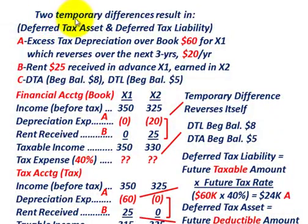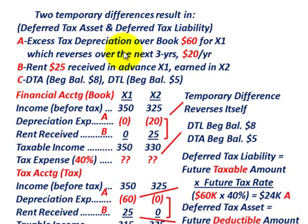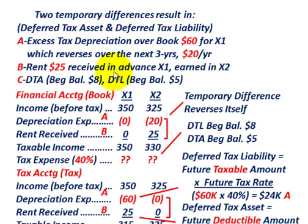What we're going to be going over here is where we're going to have two temporary differences that result in a deferred tax asset and a deferred tax liability. We're also going to have a beginning balance in both a deferred tax asset and a deferred tax liability. Our first temporary difference is an excess tax depreciation over book depreciation of $60,000 for year X1, which reverses over the next three years by $20,000 per year. Our second temporary difference is rent of $25,000 received in advance in X1, earned in X2 for book purposes. We have a beginning deferred tax asset balance of $8,000 and a beginning deferred tax liability balance of $5,000.